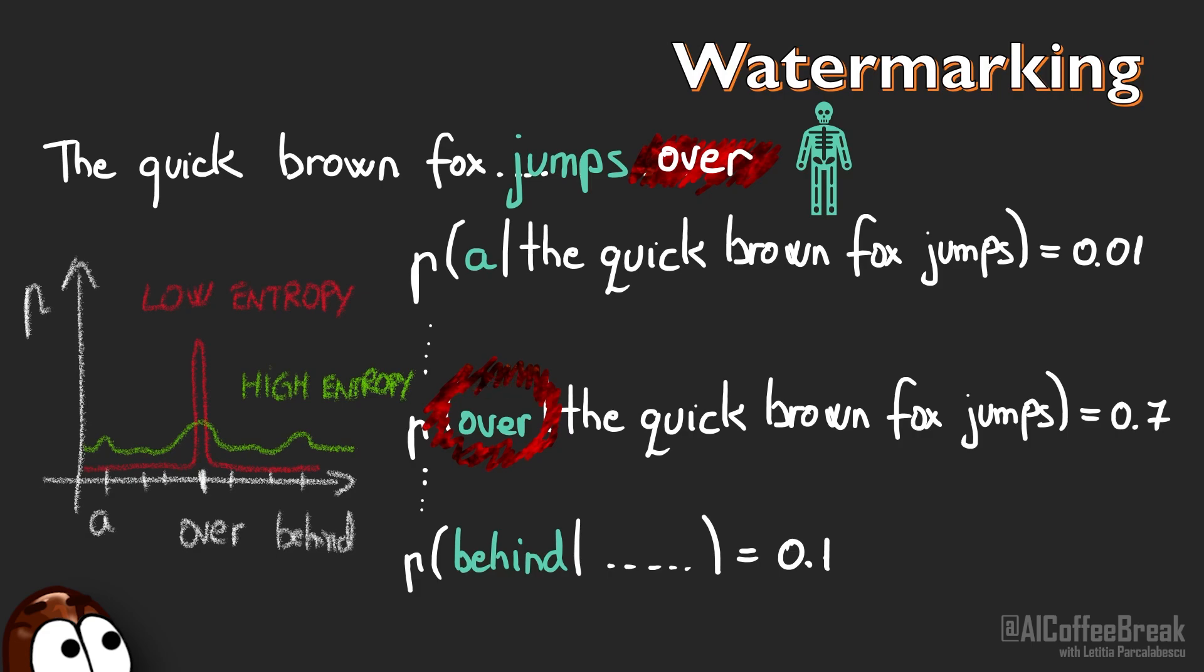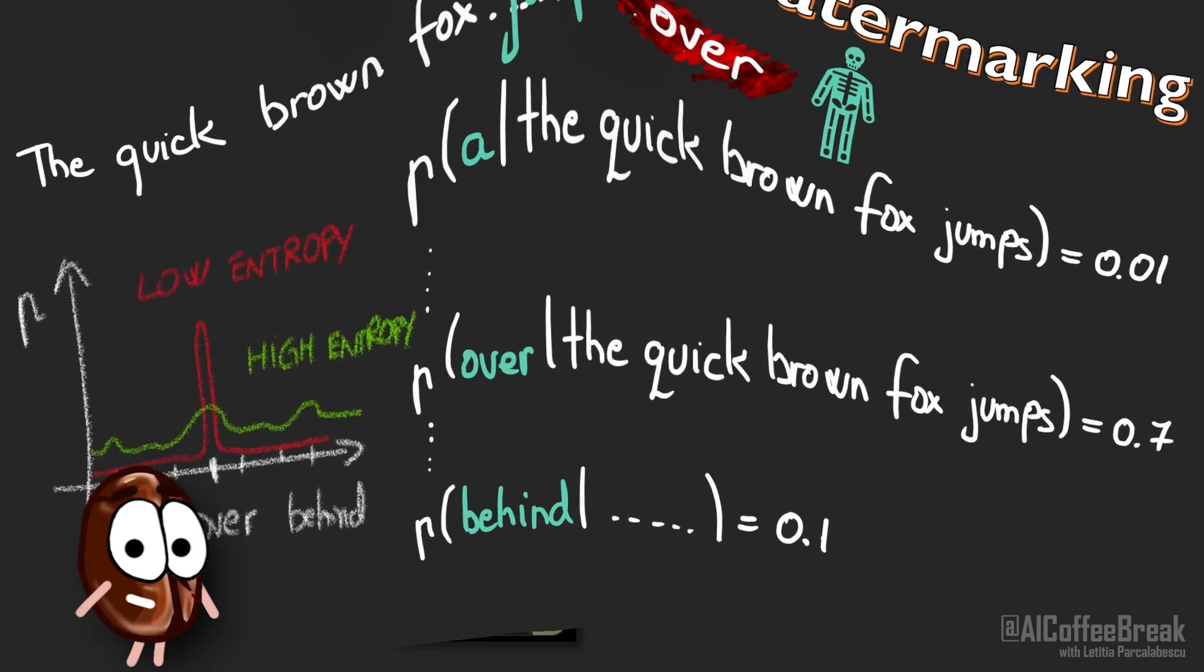So the authors make sure to never blacklist low entropy words, but rather high entropy cases, where the model can choose other words that are just as good as the blacklisted words. And this was watermarking in a nutshell.